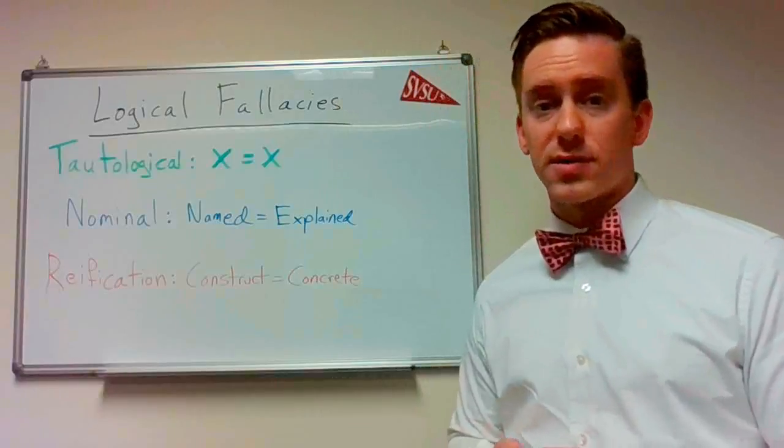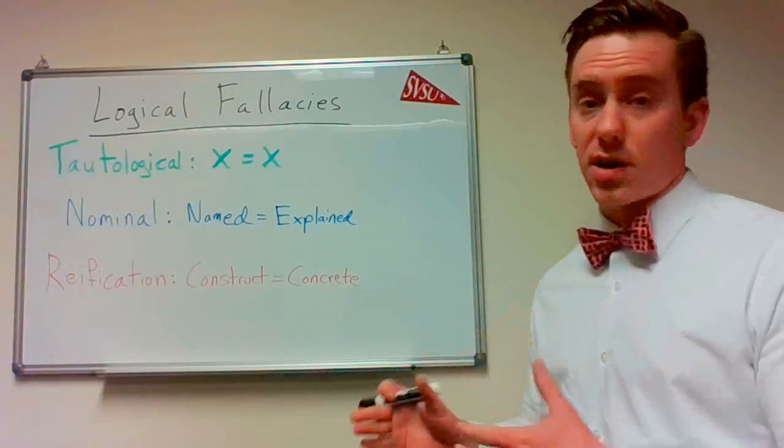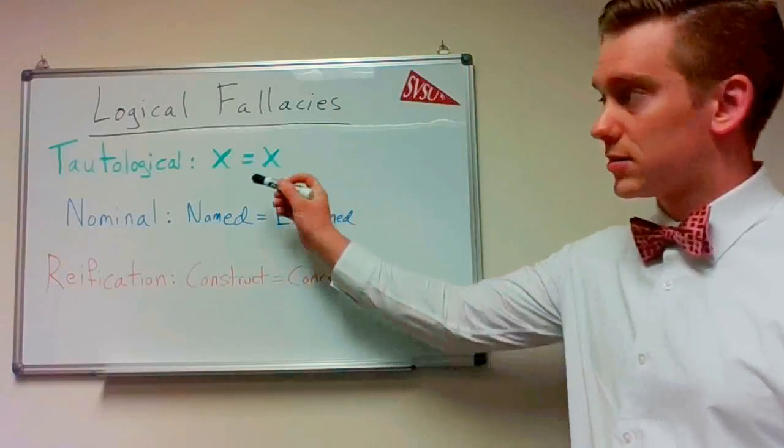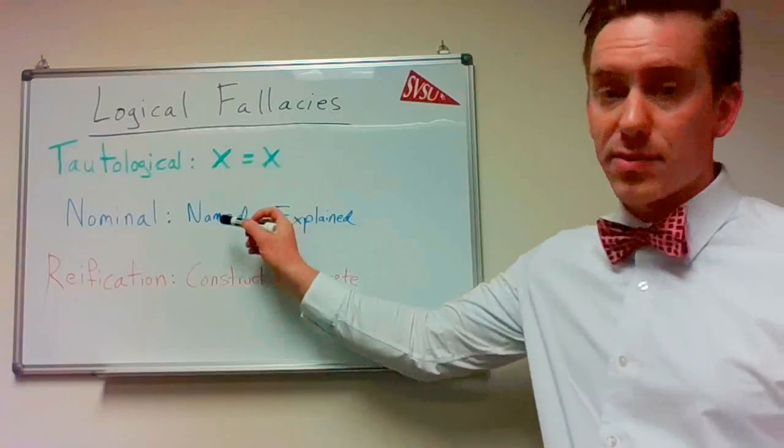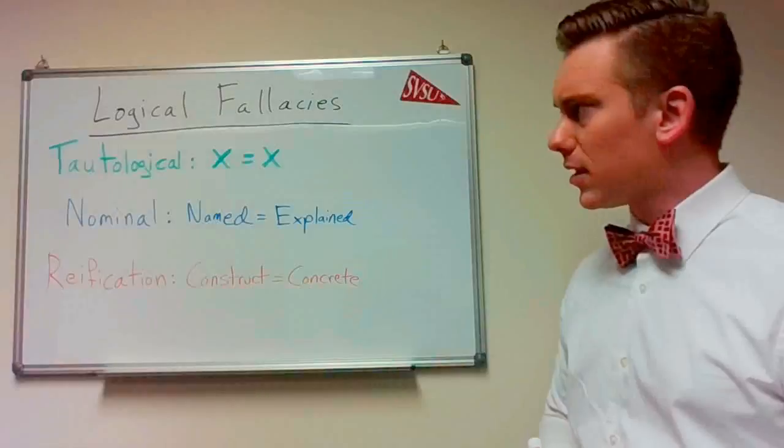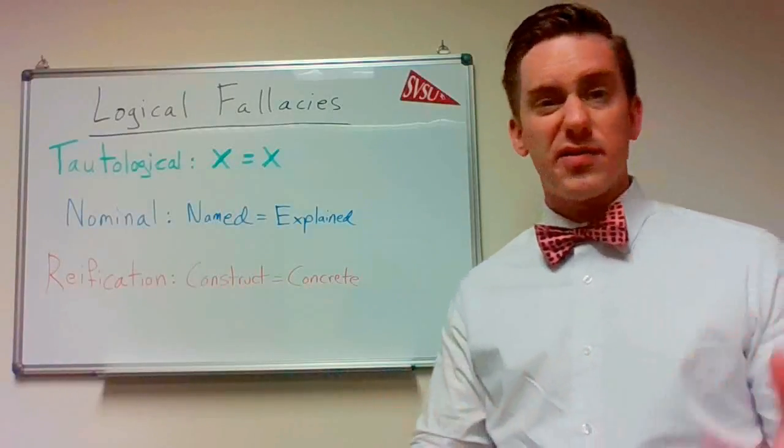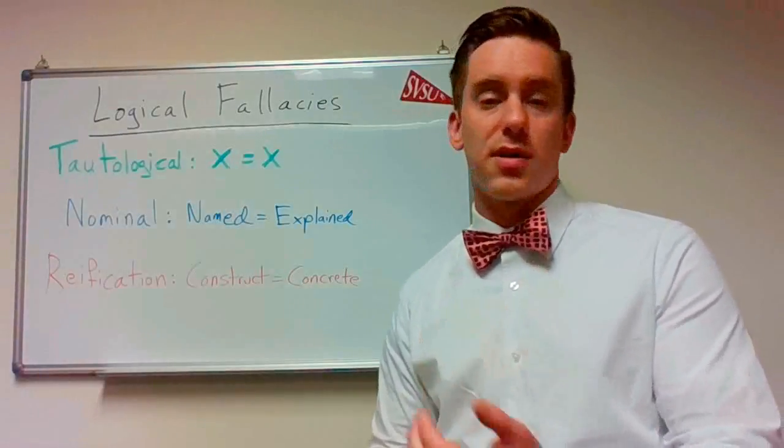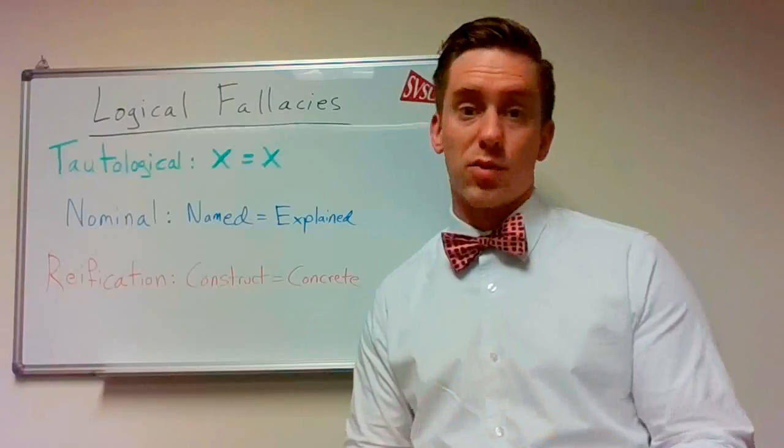There are three in particular that we're going to talk about that are relevant to our class and those are the tautological fallacy, the nominal fallacy, and the reification fallacy. So I'll go through each of them in order and give you a couple examples of each and then last we'll talk about why that's relevant to abnormal psychology.